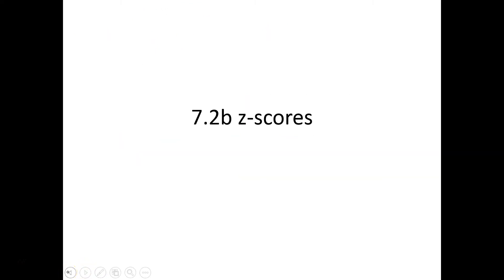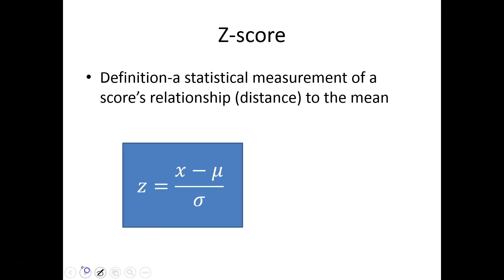Alright, let's try something new. 7.2b is called z-scores. We've actually seen z-scores already this year back in chapter 3, but today we're going to talk about using z-scores to find areas under density curves — specifically normal curves. A z-score is a statistical measurement of a score's relationship or distance to the mean. The way I think about it: how many standard deviations away is a certain value?